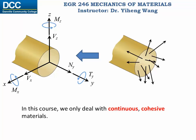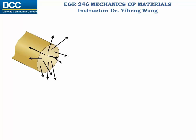Normally these resultant internal reactions are placed at a special point — the centroid point of the cross-sectional area. Let's look at a very small area, a differential area delta A on this cross-section. The force acting on this small area is delta F. Zooming in, this force delta F can be resolved into three components along the x, y, and z directions respectively.